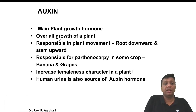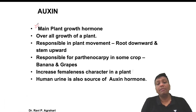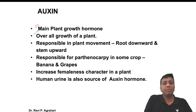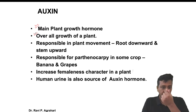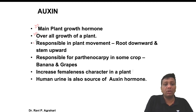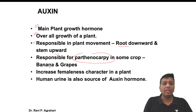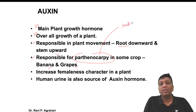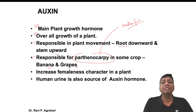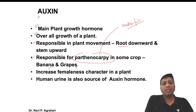First, let's discuss the hormone called auxin. Auxin is the main plant growth hormone - the overall growth of the plant actually depends on auxin. If a plant has a less amount of auxin, proper growth will not happen. Due to the presence of auxins, plant movement happens - the root goes downward and the stem goes upward. Parthenocarpy in banana and grapes is also because of auxin. Parthenocarpy means seedless fruit. Banana and grapes have no seed due to auxin.